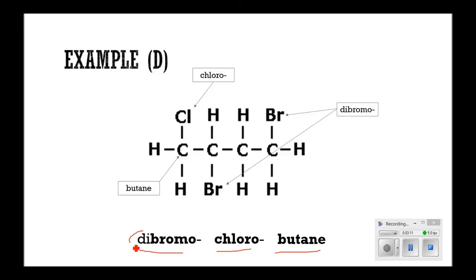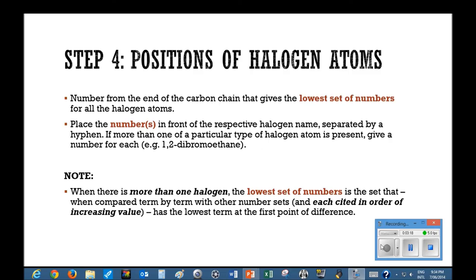Notice that when placing halogens alphabetically, we ignore the di prefix. Step four involves numbering the positions of halogen atoms. You need to number from the end of the carbon chain that gives the lowest set of numbers for all the halogen atoms. The numbers are then placed in front of the respective halogen name, separated by a hyphen. If there are more than one of a particular type of halogen atom, you need to also give each a number. More care is needed when two or more halogens are present — this will be discussed shortly.